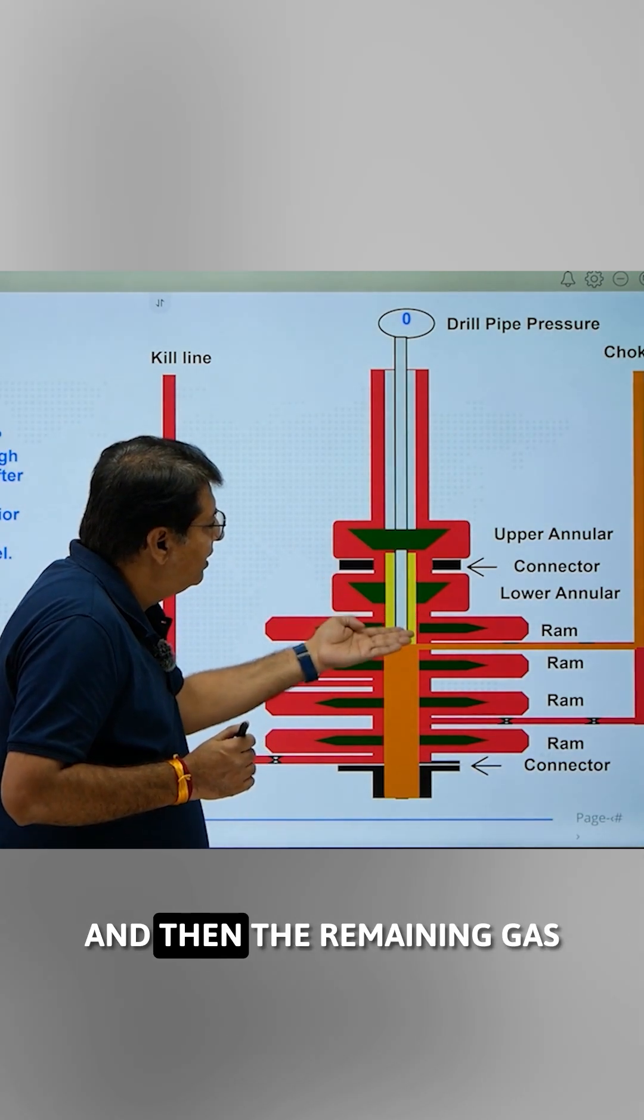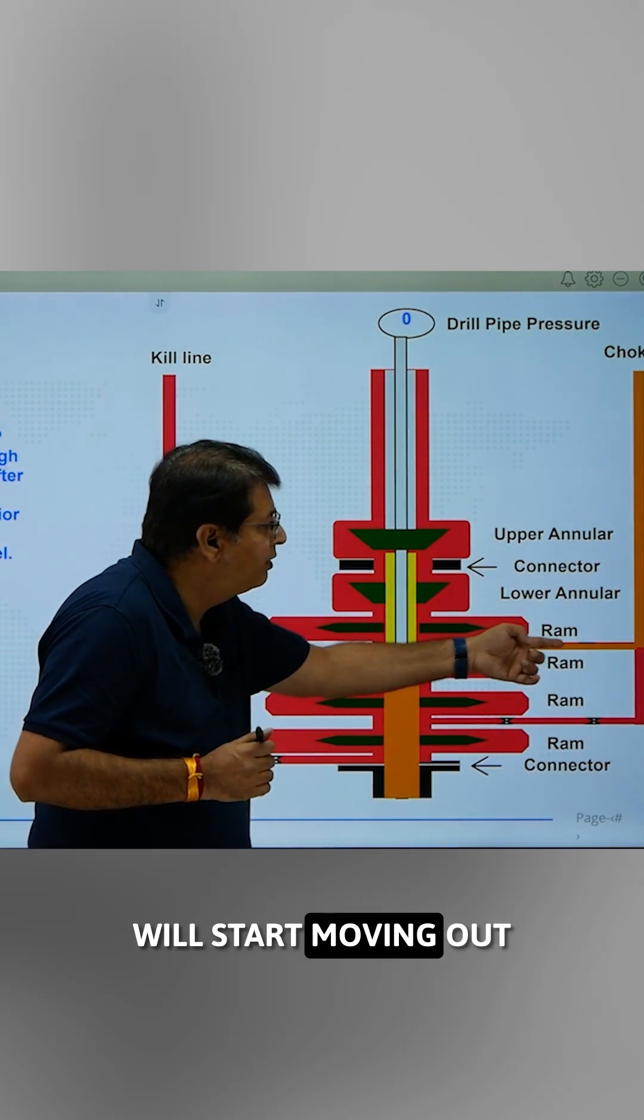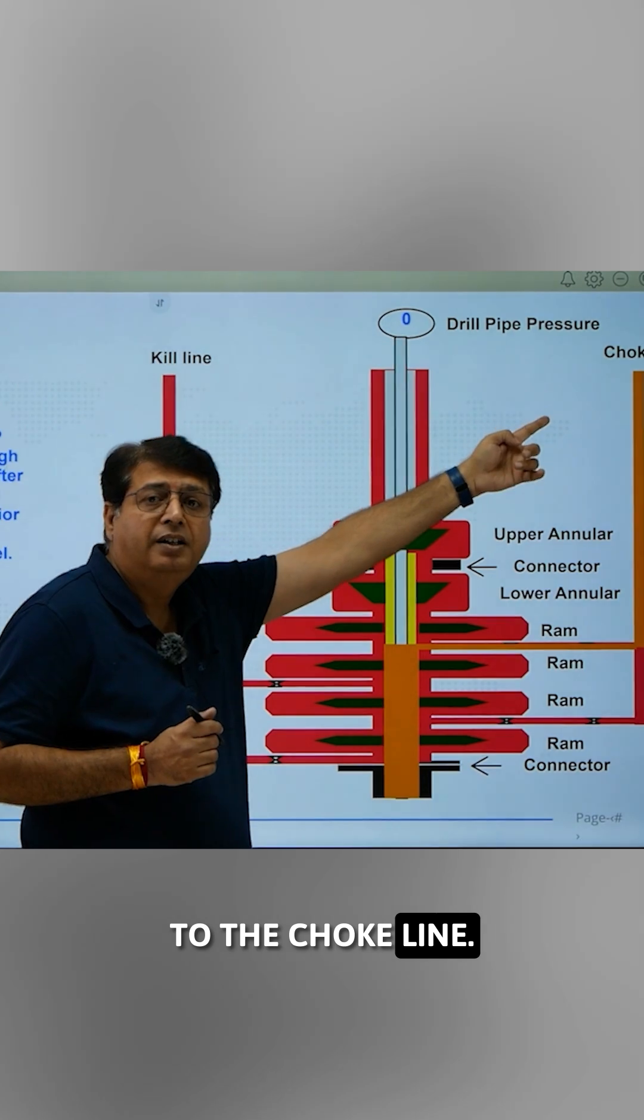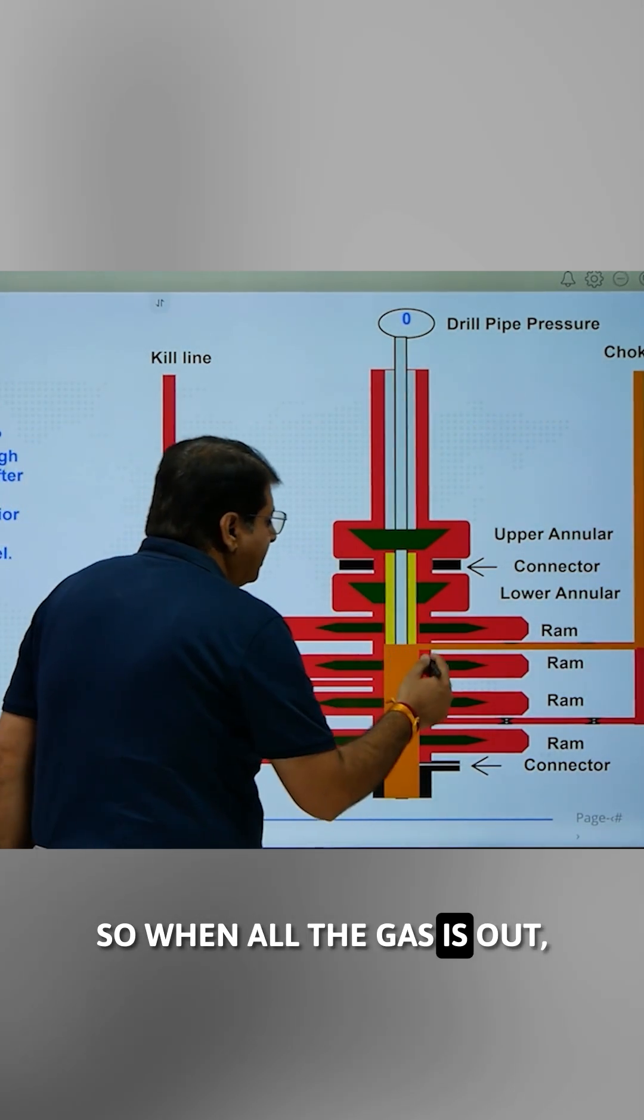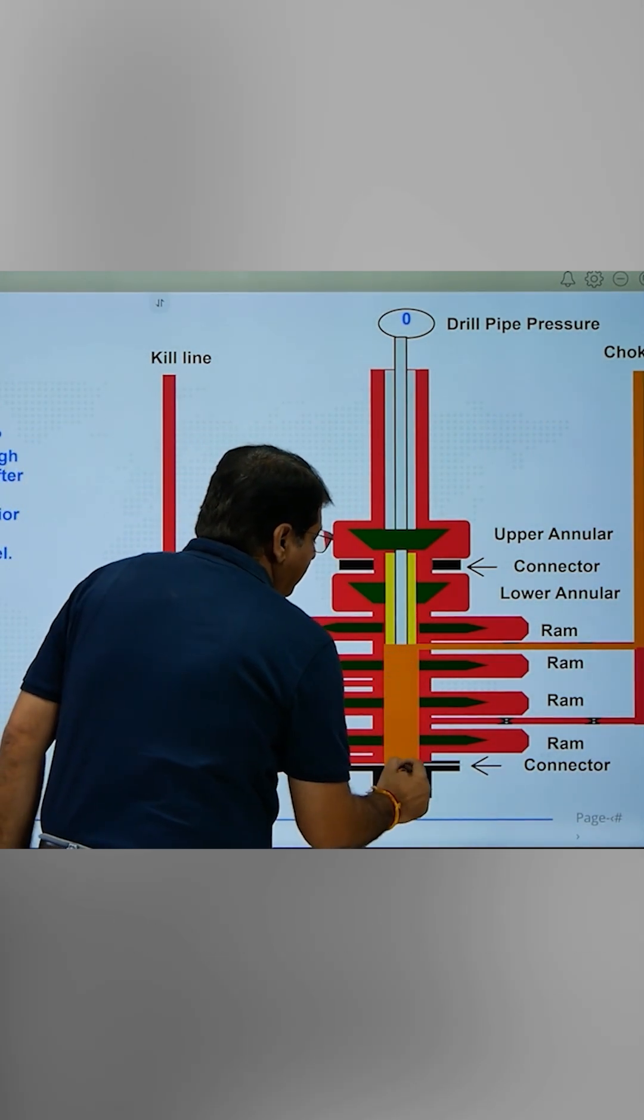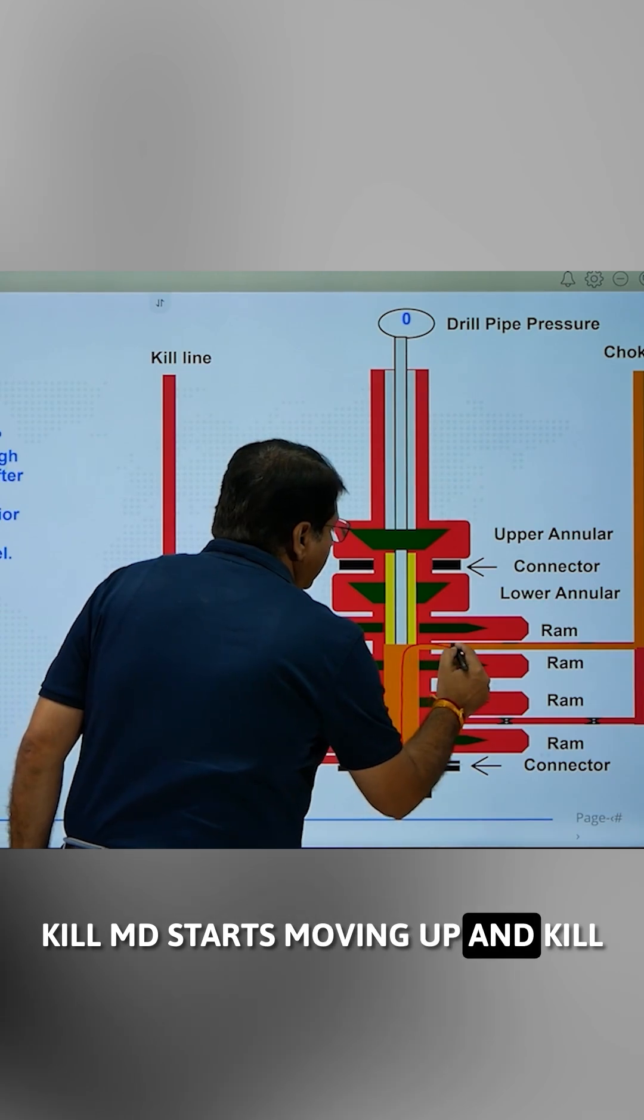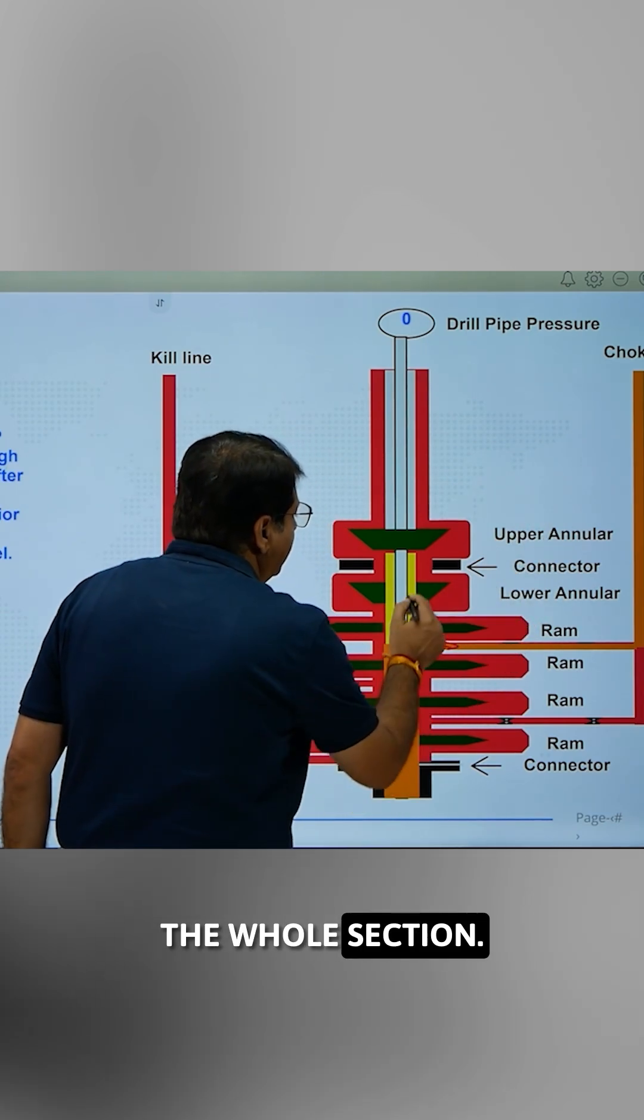So what happens? Gas slowly comes up and gas will come up, and then the remaining gas will start moving out through the choke line. So when all the gas is out, then what will happen? Kill mud starts moving up and kill mud will displace the whole section.